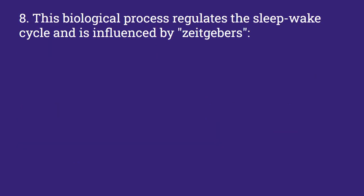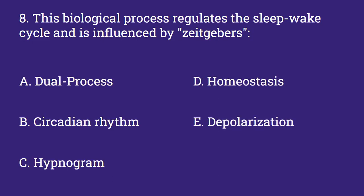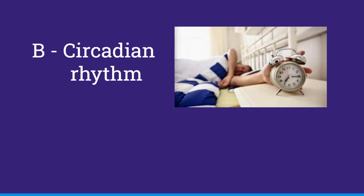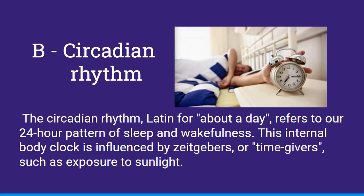This biological process regulates the sleep-wake cycle and is influenced by Zeitgebers. Options: dual process, circadian rhythm, hypnogram, homeostasis, depolarization. And this is B, the circadian rhythm. The circadian rhythm, Latin for 'about a day,' refers to our 24-hour pattern of sleep and wakefulness. This internal body clock is influenced by Zeitgebers, or time-givers, such as exposure to sunlight.